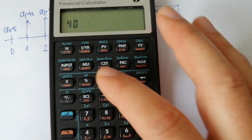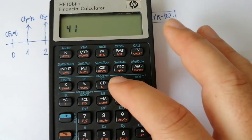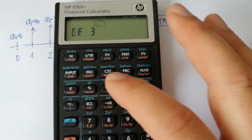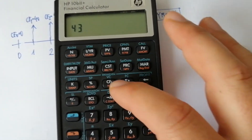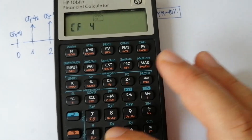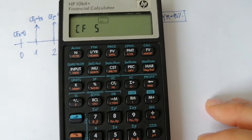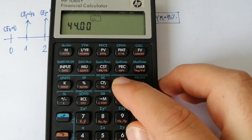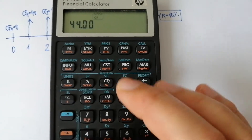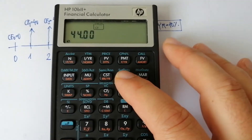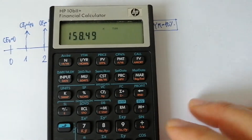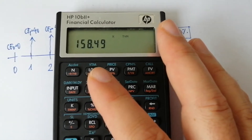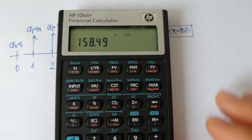Then enter 40, 41, 42, 43, and 45 as the remaining cash flows. Then you can calculate the net present value — press red and NPV. The result is 158.5 approximately.